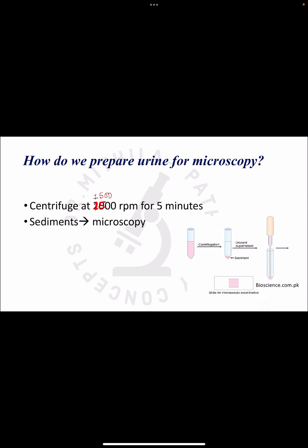The first question is: how do we prepare a urine sample for microscopic examination? We take the urine in a test tube, then centrifuge the sample at 1500 rpm for a duration of 5 minutes. After that, we discard the supernatant, take the sediment on a glass slide, and cover it with a cover slip. This is how we prepare the urine drop for microscopic examination.